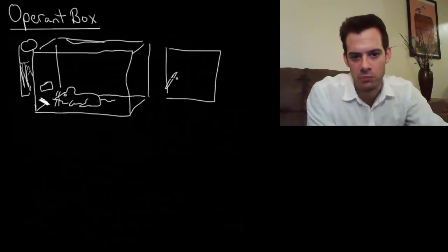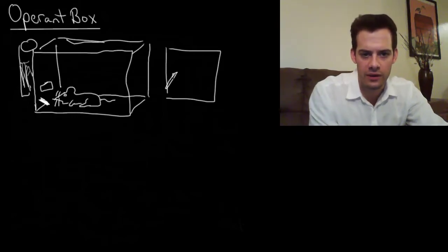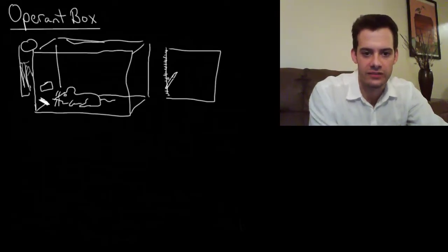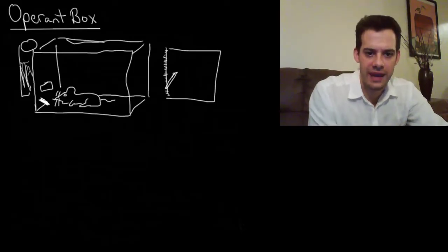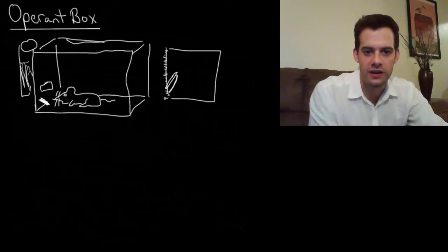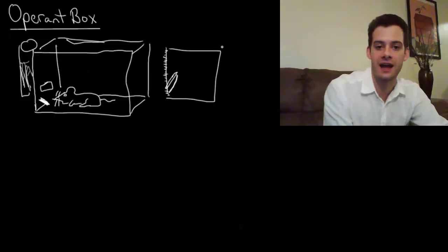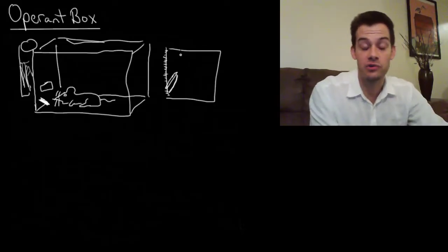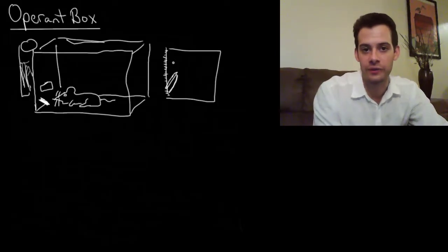The other part of the box was that it was connected to a device which was essentially just a pen and a sheet of paper. The pen would move to the right over time — that tells us about time passing — and each time the animal did the behavior, like press the lever or peck at the disc, the pen would click up. So over time the pen draws a line showing the cumulative number of lever presses, allowing Skinner to track different schedules of reinforcement and how they influenced behavior.